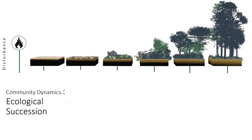Moving forward, we'll talk about how communities move forward. This is the section of community dynamics where we study ecological succession. Ecological succession is a progressive process where one particular species occupies a particular region and is taken over by other species, forming communities together where they compete for natural resources, subsequently forming larger vegetations and a more complex community.